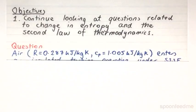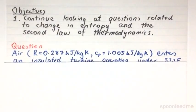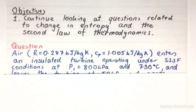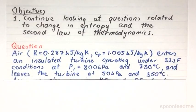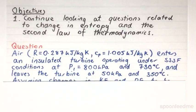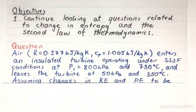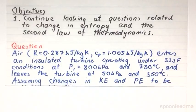So the question stipulates that air, with these certain properties, enters an insulated turbine operating under steady flow conditions at an initial pressure of 800 kilopascals and an initial temperature of 730 degrees Celsius, and then it leaves the turbine at 50 kilopascals and 350 degrees Celsius.